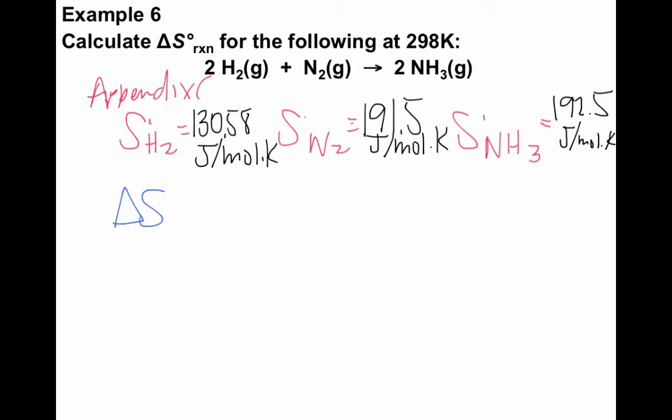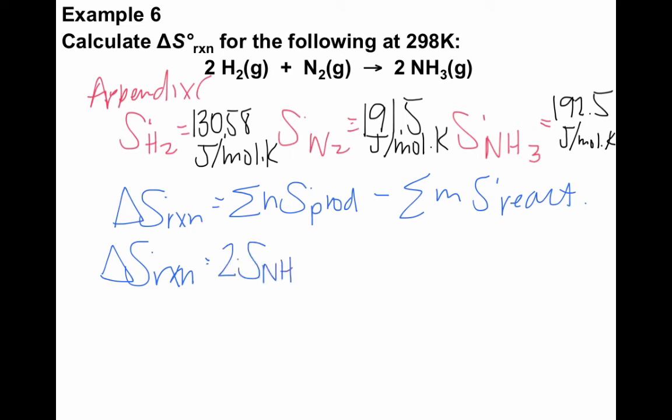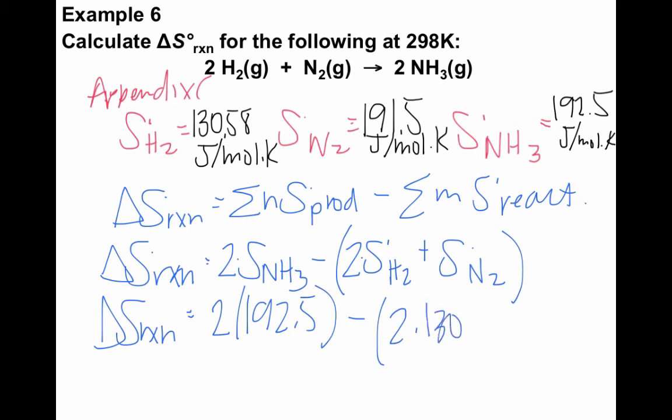So what we're going to do now is take each of these and we're going to figure out using our equation. So remember delta S of reaction is equal to the sum of S naught products minus the sum of S naught reactants. So let's take our products first. We have just one product in this case. So we have 2 times the standard molar entropy of ammonia gas minus the sum, so 2 times S naught of H2 plus the standard molar entropy of nitrogen.